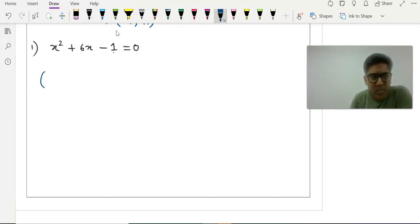Step number 1, we open two brackets, whole square minus whole square. Keep the last term minus 1 as it is. Your x², we will write here as x plus sign, we will keep it same. If it is negative, we will write negative. 6, we will divide by 2. So half of 6 is 3.